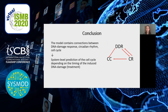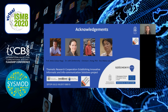The conclusion of our project is that, based on our model containing the connections between the DNA damage response, the circadian rhythm, and the cell cycle — especially the clock-dependent DDR and the direct and indirect effects of the DDR on the cell cycle — we can make system-level predictions of the cell cycle depending on the timing of the induced DNA damage. Hopefully, this can be used for human chronotherapy in the future. I would like to thank my research group, our collaborators, and thank you for your attention.